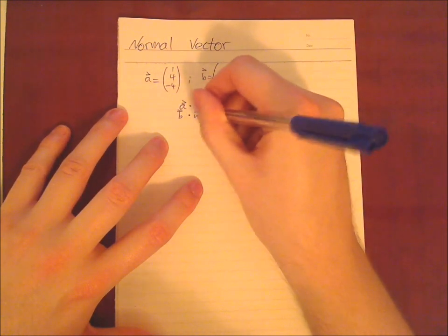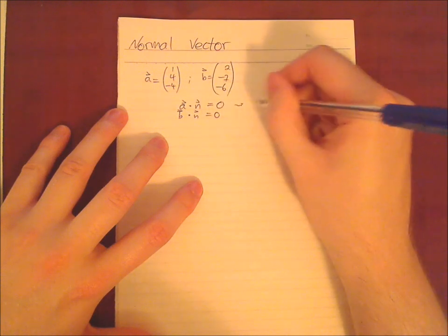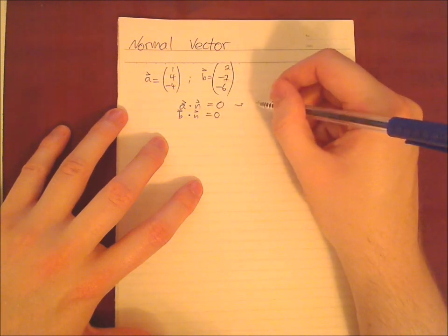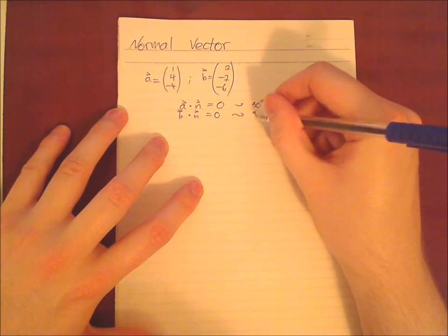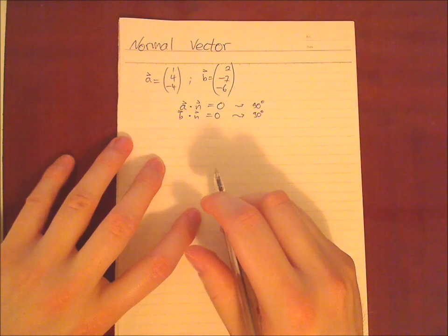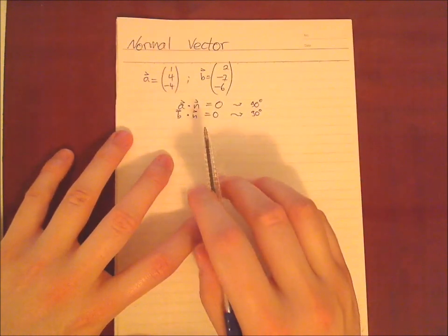And so it means we have an angle between n and a of 90 degrees and again between n and b also 90 degrees. And there are two ways how to do it.